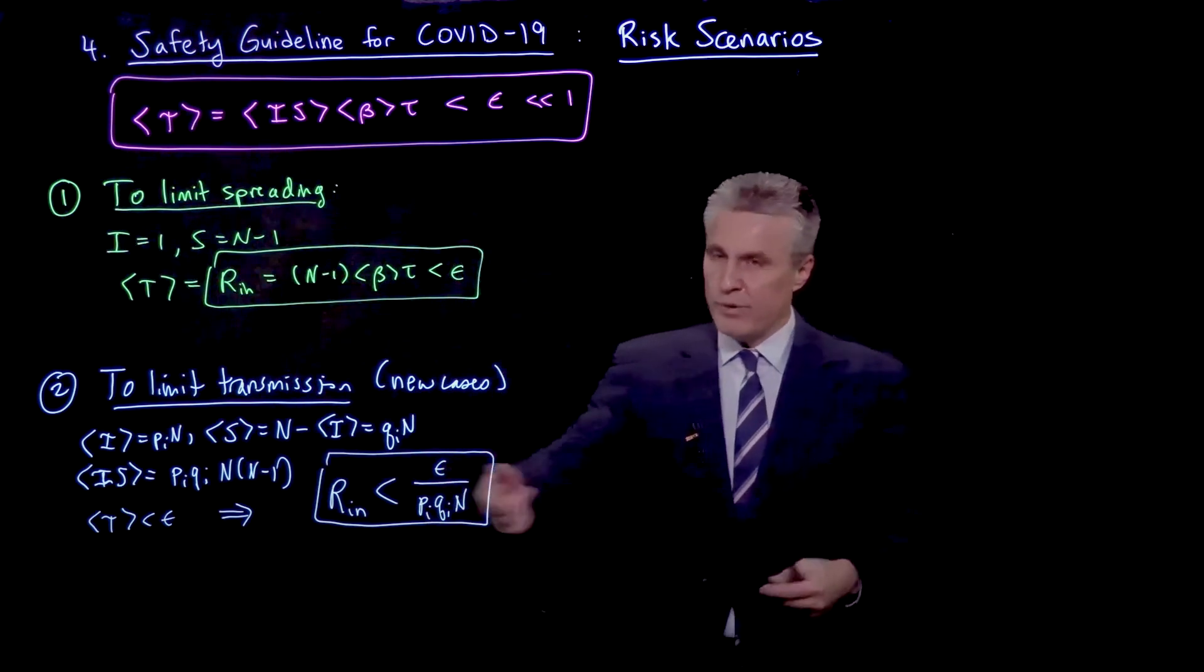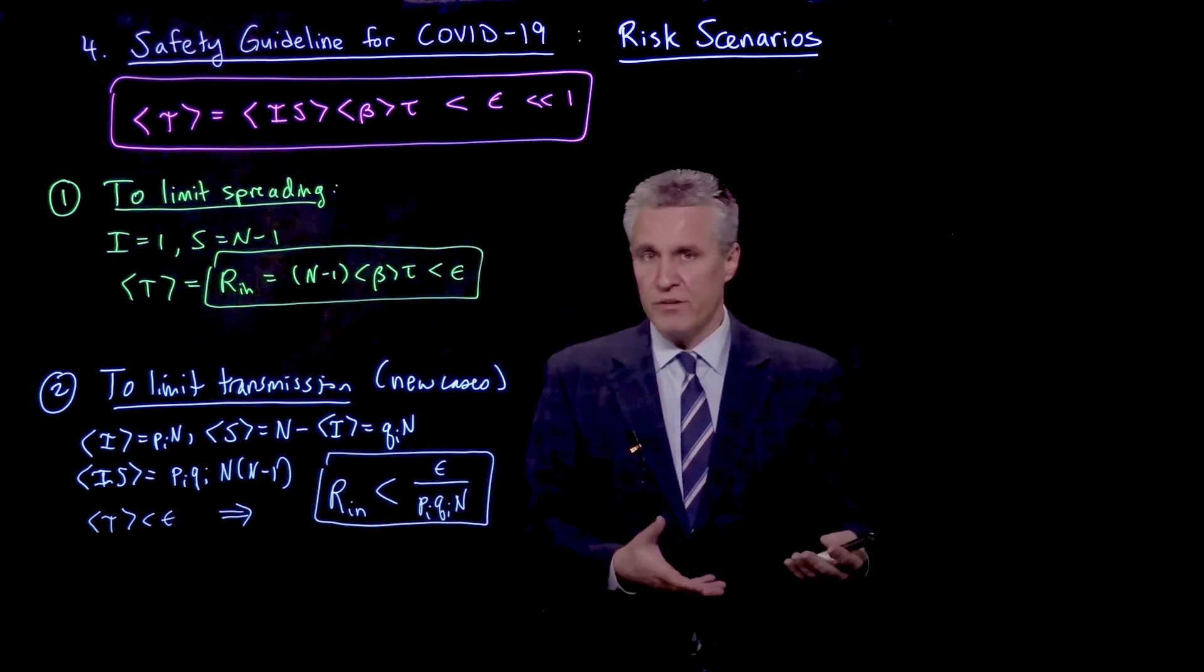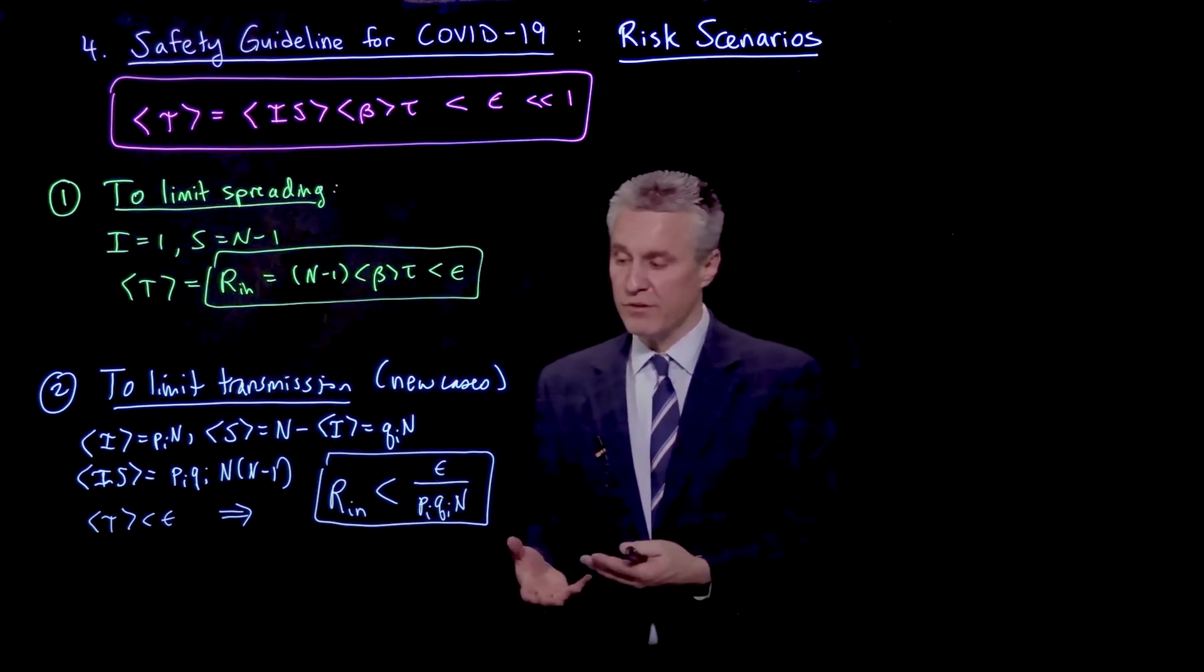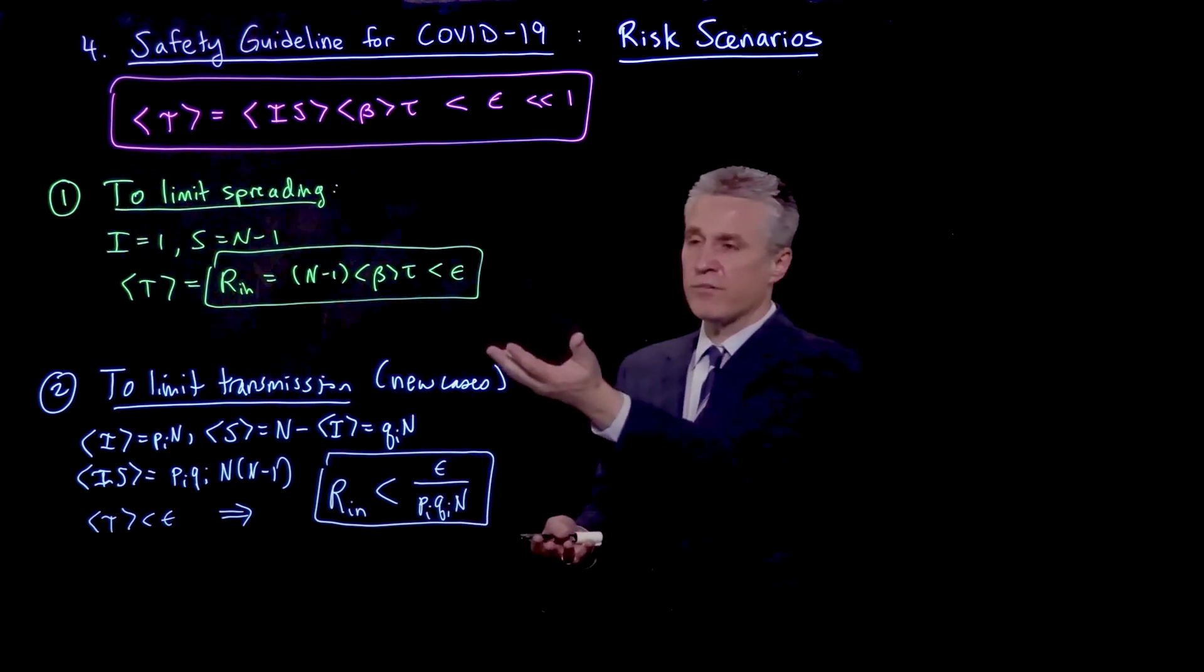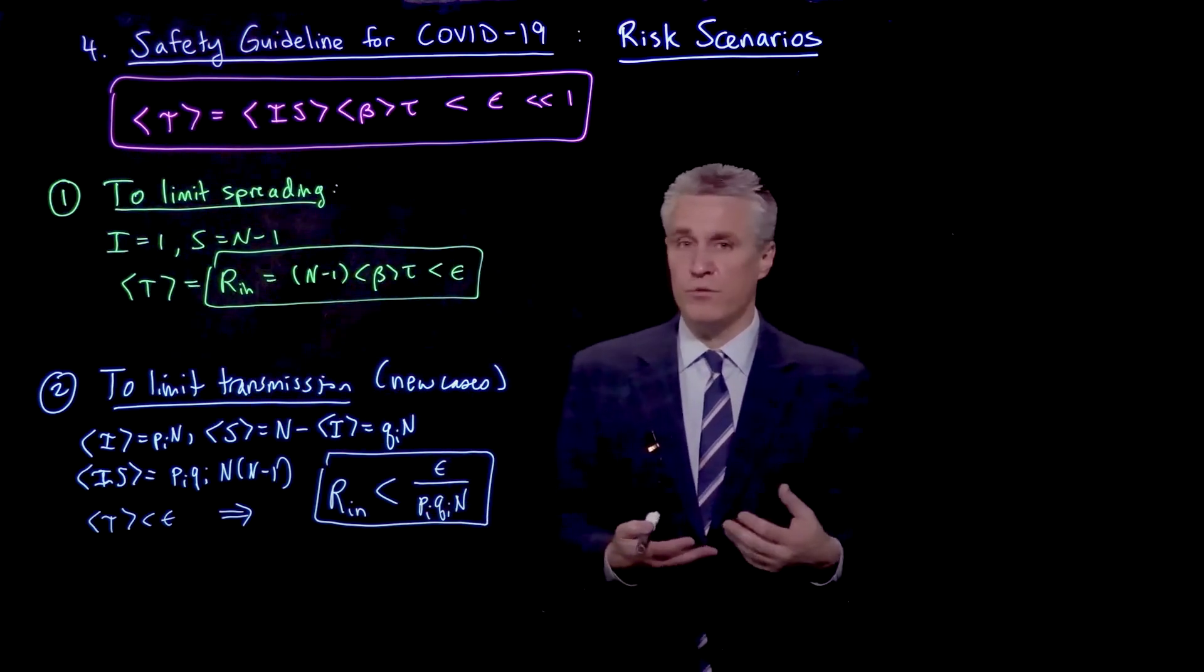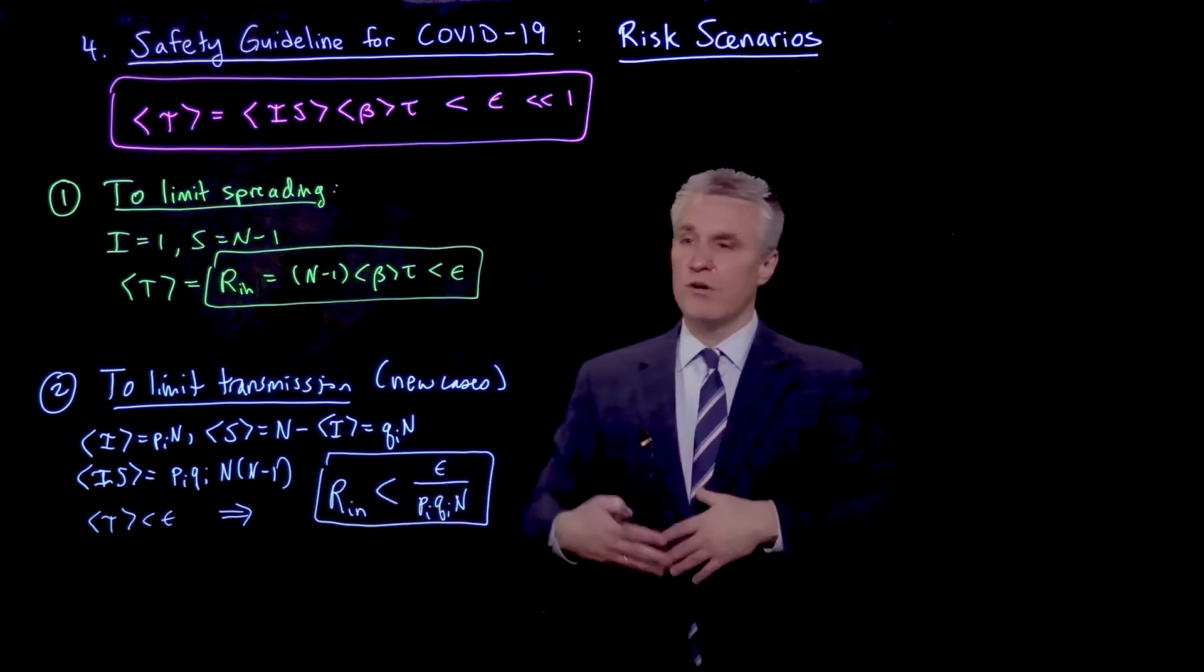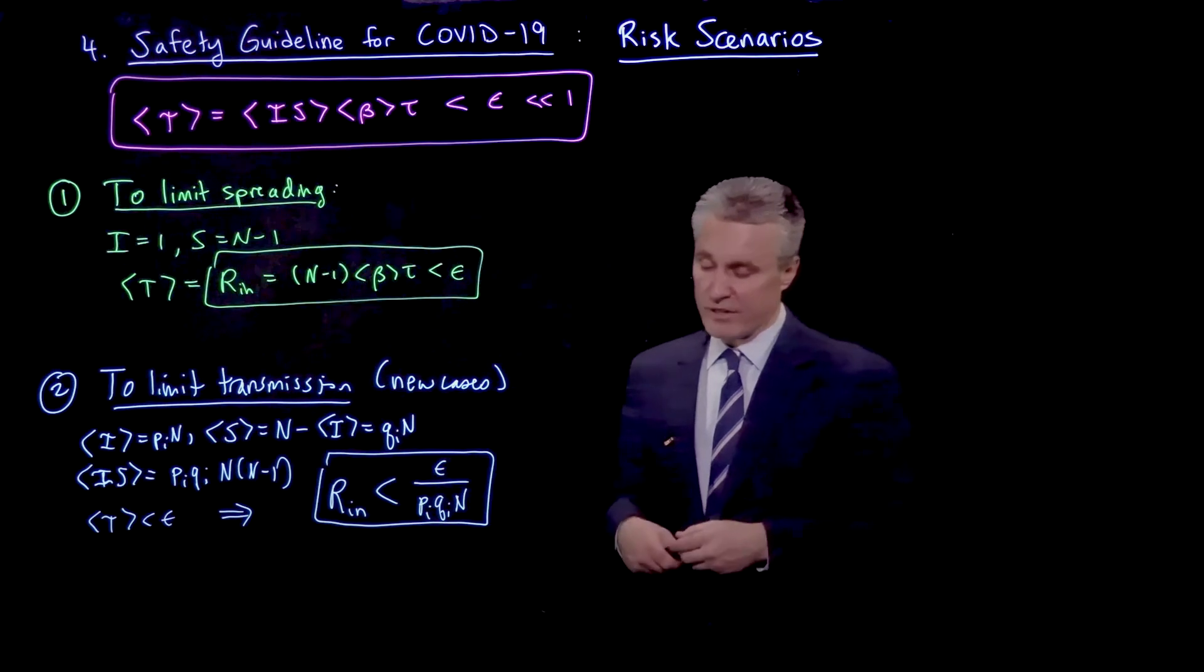And so this allows us, as P_I goes to 0 and Q_I goes to 1, in other words as the infection becomes less prevalent, then we can start modifying our guideline to increase this bound and, for example, allow more people to enter the room or to increase their time in the room or to maybe turn down the ventilation a little bit.